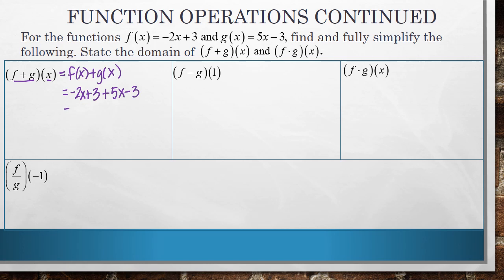And then once we've done that, we'll combine our like terms. Negative 2x plus 5x is 3x, and 3 minus 3 is nothing. So we're left with just 3x.